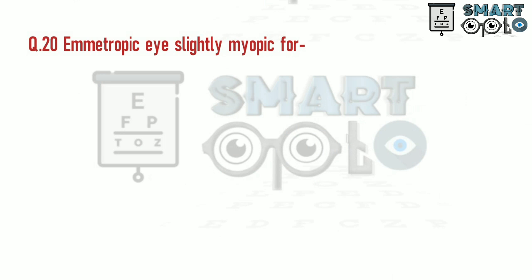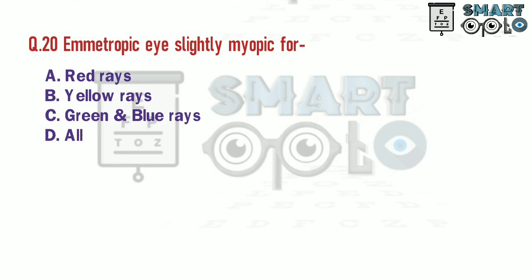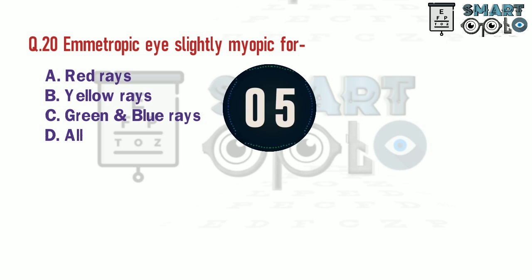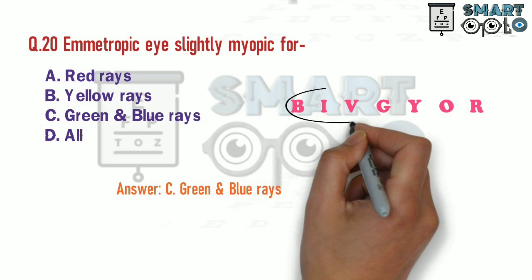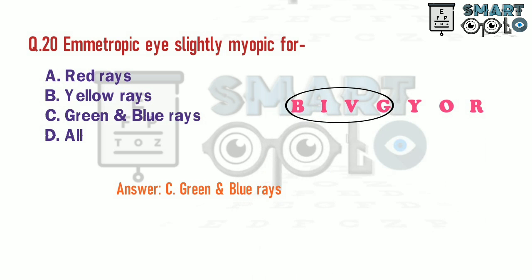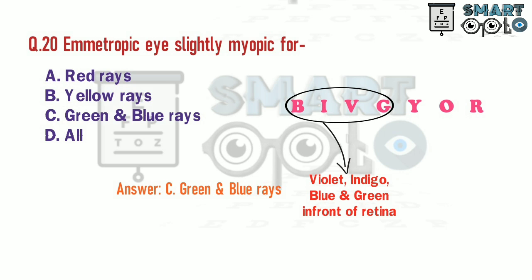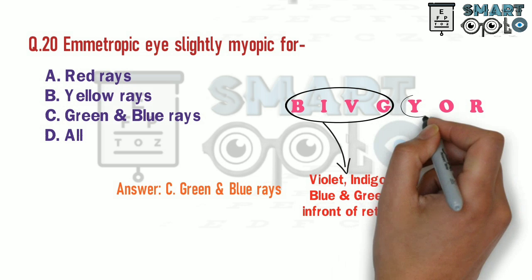Q20. An emmetropic eye is slightly myopic for: A. Red rays. B. Yellow rays. C. Green and blue rays. D. All rays. The letters B, I, V, G represent the violet, indigo, blue, and green rays which are focused in front of the retina.